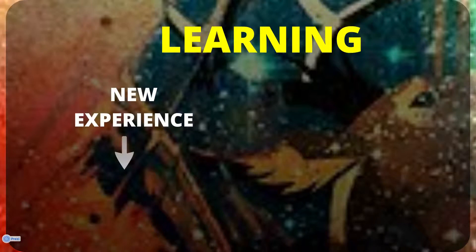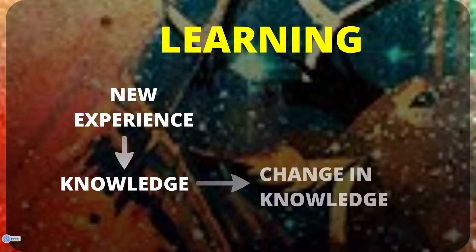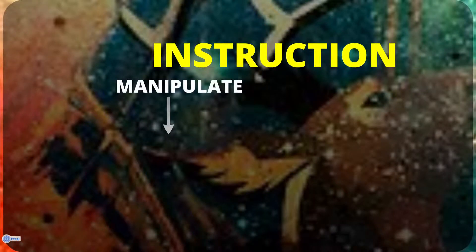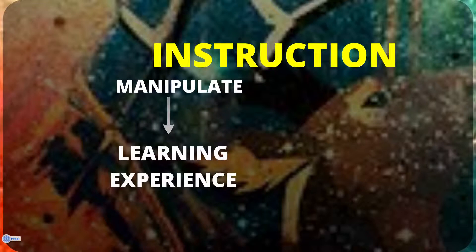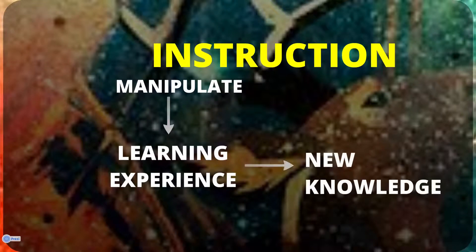Let's first look at a couple of principles of learning and instruction. Learning is essentially taking a new experience and integrating it with prior knowledge to create new knowledge, or a change in knowledge. In instruction, the teacher is artificially manipulating a learning experience to create a desired new knowledge — doing something to the learning experience that results in a more or less effective learning experience and a change in knowledge.